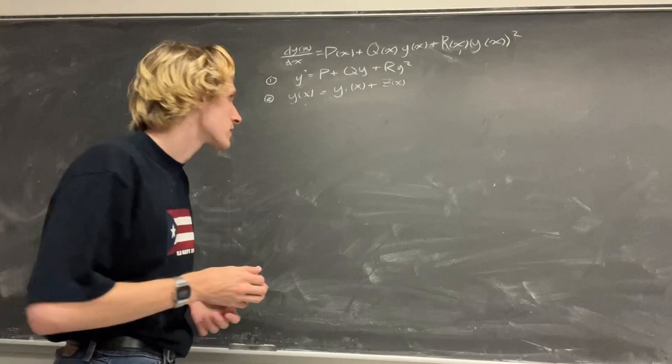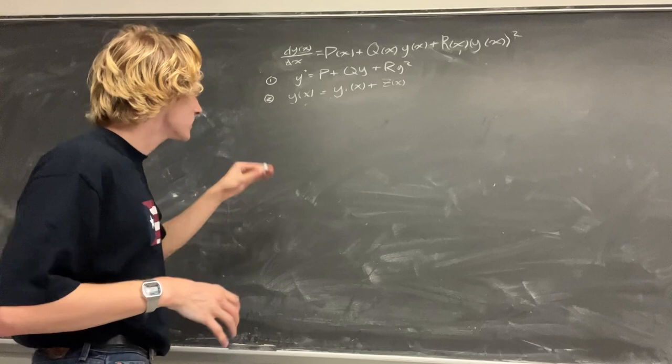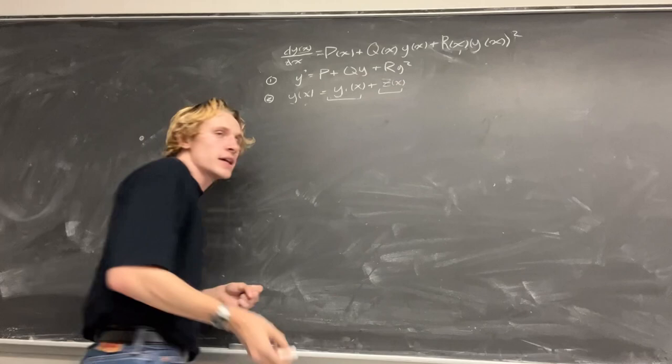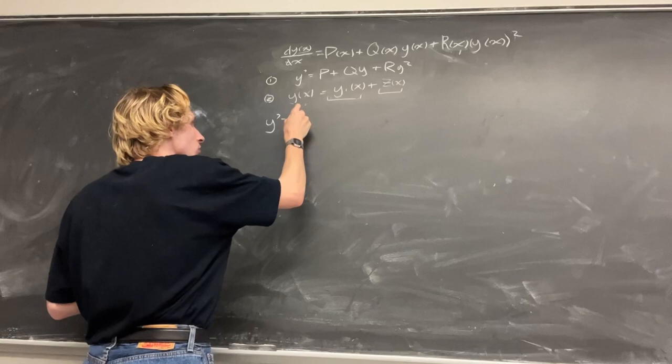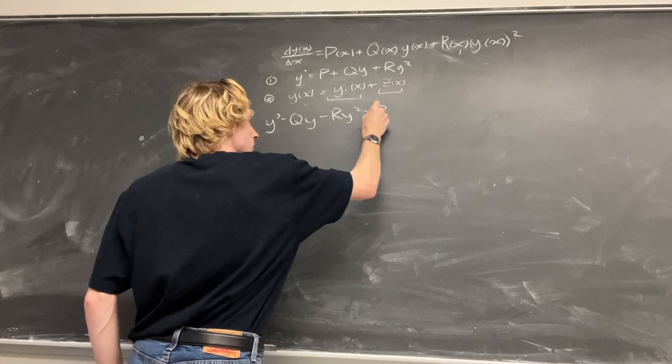To start, we know that all solutions have a particular part added with a homogeneous part. And what that means is that if we were to rearrange equation one, we would get y' - q(x)y - r(x)y² = p.